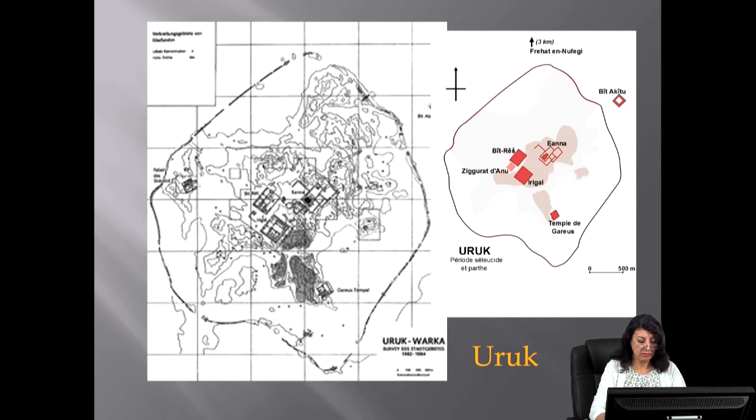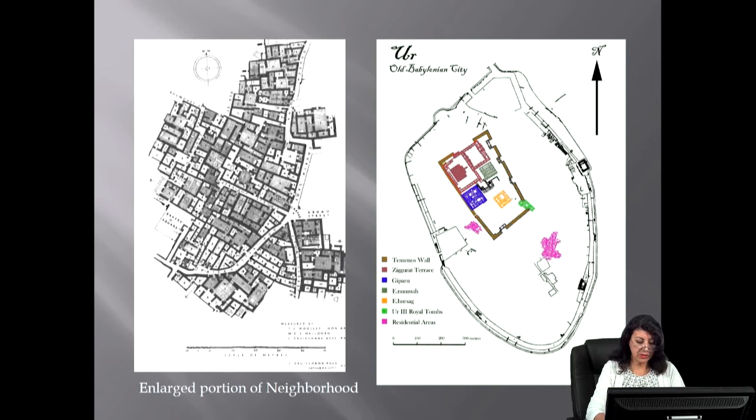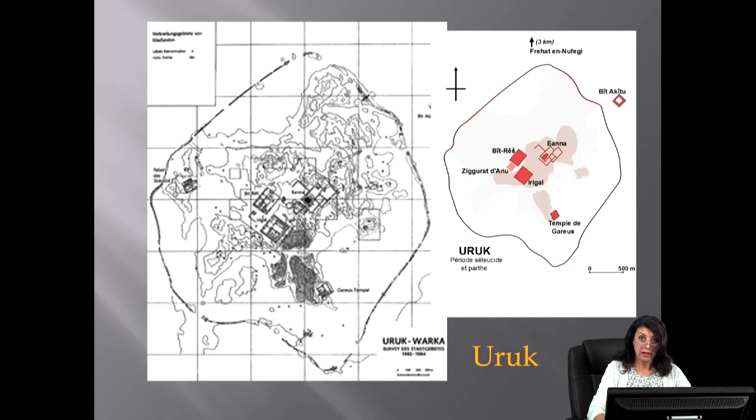In addition to houses, neighborhoods included several shops, small shrines for relatively minor Mesopotamian deities, and sometimes small workshops spread within the irregular fabric. Some crafts may have been concentrated in specific neighborhoods, such as tanners and metalworkers.